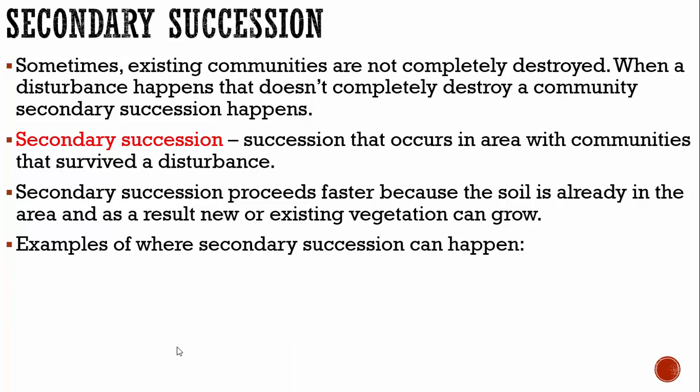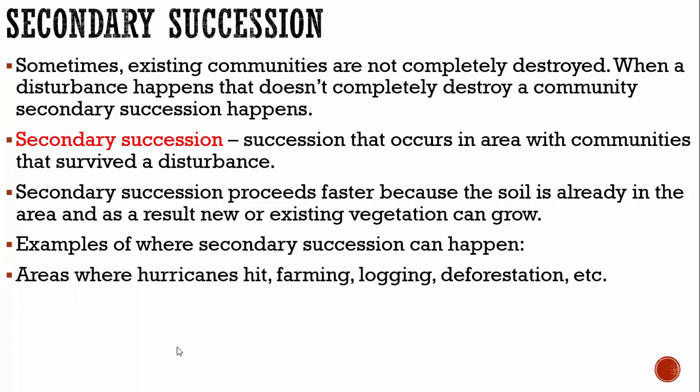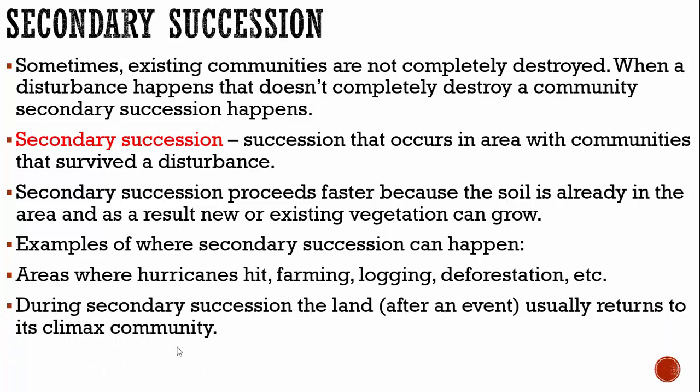Examples of where secondary succession can happen include areas where hurricanes hit, farming, logging, and deforestation. During secondary succession, the land after the event usually returns to its climax community. The climax community is always found at the end of a sequence, and it will always involve trees and shrubs.